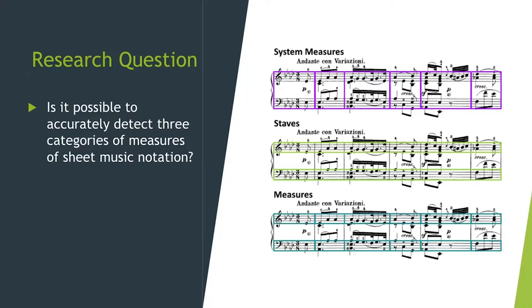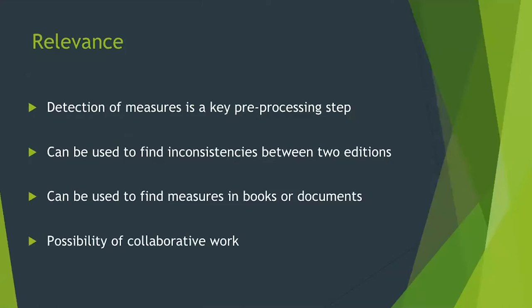There are multiple relevances for this work. First, detection of measures is a key preprocessing step, which we saw in previous presentations. It's important that we know where these measures are and can accurately predict them. You can also use this to find inconsistencies between two editions, find measures in books, or extract them from documents.